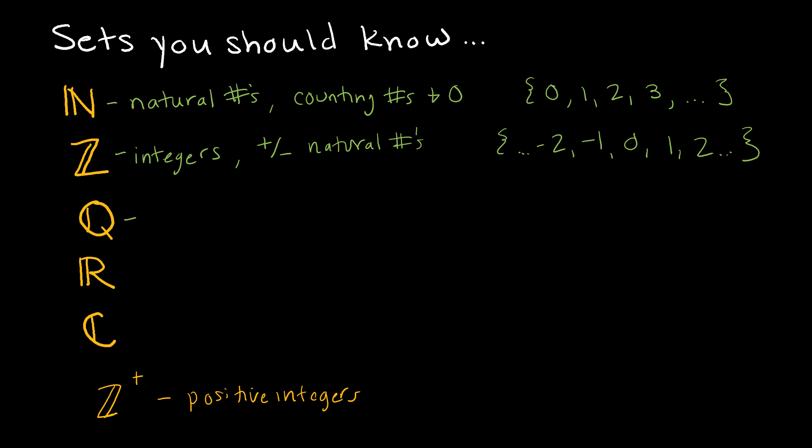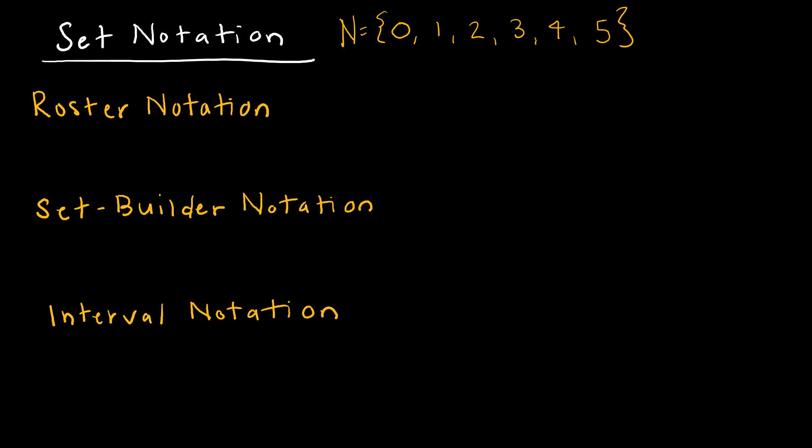Q represents rationals, all of the rational numbers, and remember rationals are any values that can be written as a ratio of two integers essentially. Then we have R, the set of real numbers, and C, which is the set of complex numbers. And really there's just too many to list, but you get the idea. So here are some of the sets that you should make sure you know because you will see this notation in your textbook quite often, as a capital and bold-faced N, Z, Q, and R.